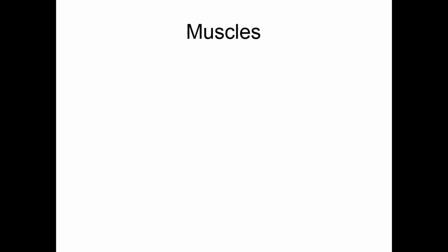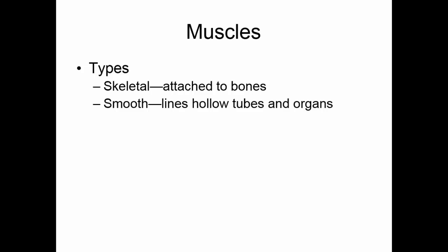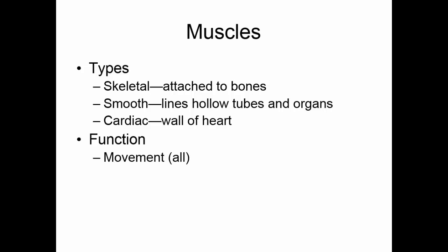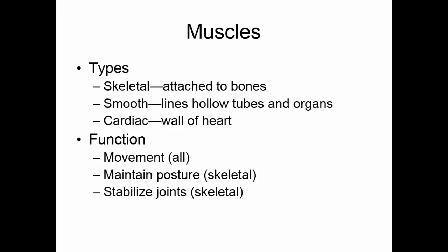The series of muscles that help us move are known as the muscular system. There are three types of muscles: skeletal muscle, which is attached to bones and is the focus of the muscular system; smooth muscle, which lines hollow tubes and organs in the body; and cardiac muscle, found in the wall of the heart. All muscle functions in movement — whenever muscles contract or shorten, something moves. Skeletal muscle also helps us maintain our posture and stabilizes joints.